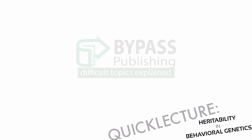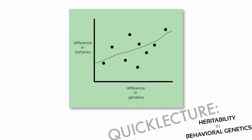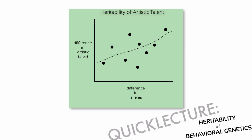Let's take a look at a couple of idealized graphs to illustrate the point. We've laid out the relationships between two variables. Along the x-axis, we have magnitude of difference in genetics, and along the y-axis, we have magnitude of difference in behavior. We usually measure the difference in genetics through difference in alleles at selected points in the genome. We can put any behavior we choose on the y-axis — just for fun, let's use artistic talent. Each point on the graph represents two people and displays their difference in genetics and difference in artistic talent.